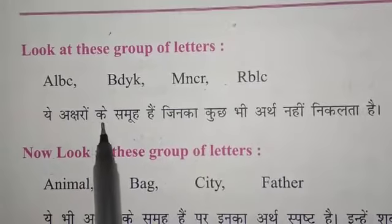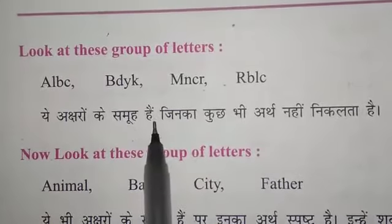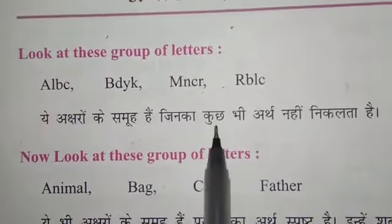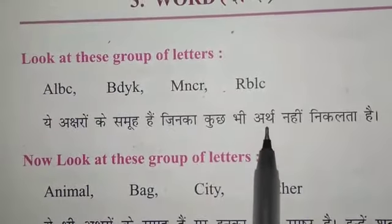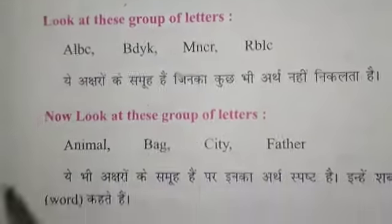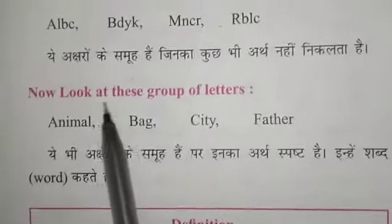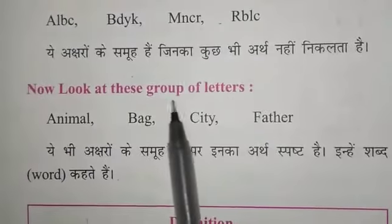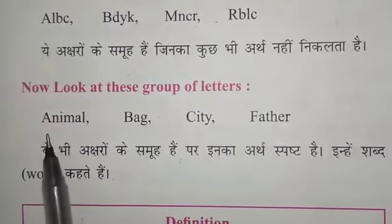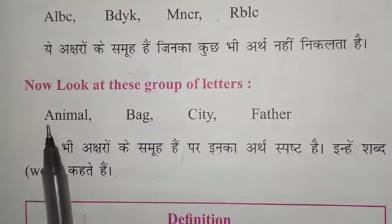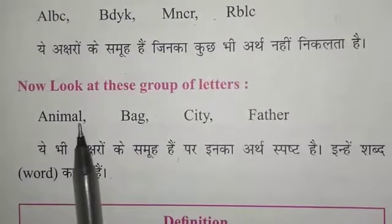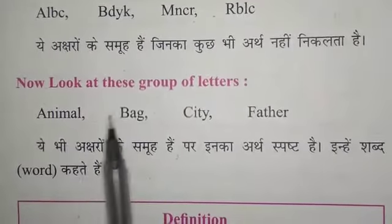This is a group of letters which has a meaning. For example: A, N, I, M, A, L — Animal. This group of letters forms the word 'Animal.'